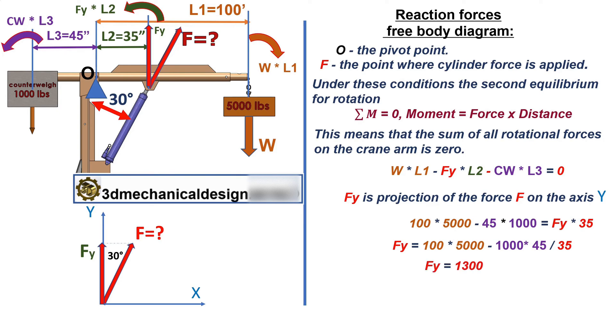Fy equals 13,000 pounds. F equals Fy divided by cos 30 degrees. F equals 15,000 pounds.